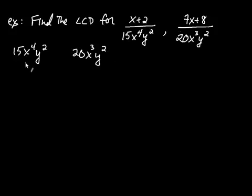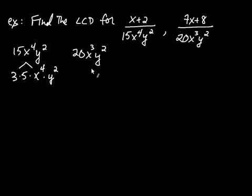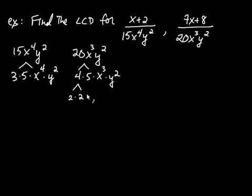15 is 3 times 5. x to the 4th is simply four x's, so we leave it as x⁴. y² is y multiplied by itself twice. For the 20, that's 4 times 5, and 4 factors further as 2 times 2. Then we bring down the 5, and x³ and y² are left as they are.